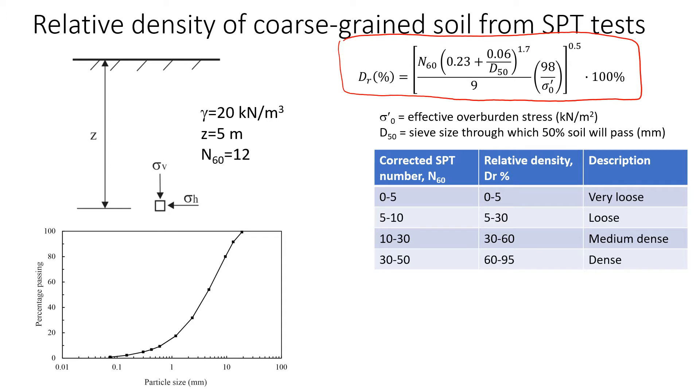Let's see how we can use it in practice. Let's look at this example when we have ground surface and we have a test that we conducted 5 meters below the ground. We know that the unit weight of this soil, and this soil is going to be sand, is about 20 kN per cubic meter. And according to the SPT test, we have this N60 value equal to 12.